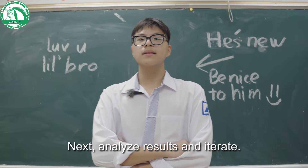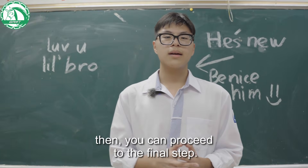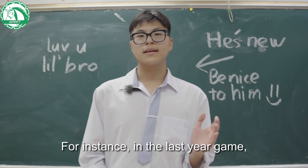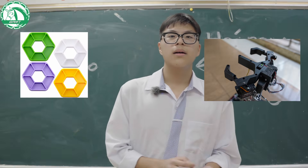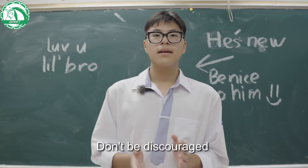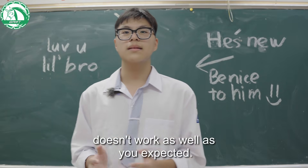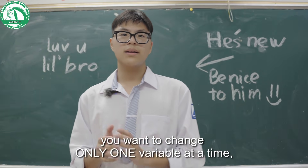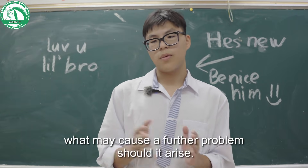Next, analyze the results and iterate. If the mechanism has achieved the result you want, you can proceed to the final step. Of course, reality is not always so favorable. For instance, in last year's game, we discovered that the pixel didn't fit in the claw, and we had to go back to the previous stage and make a new prototype. Don't be discouraged if your second or even third attempt doesn't work as expected. However, don't change too many things at once — you want to change only one variable at a time, or else you won't know what may cause a further problem should it arise.